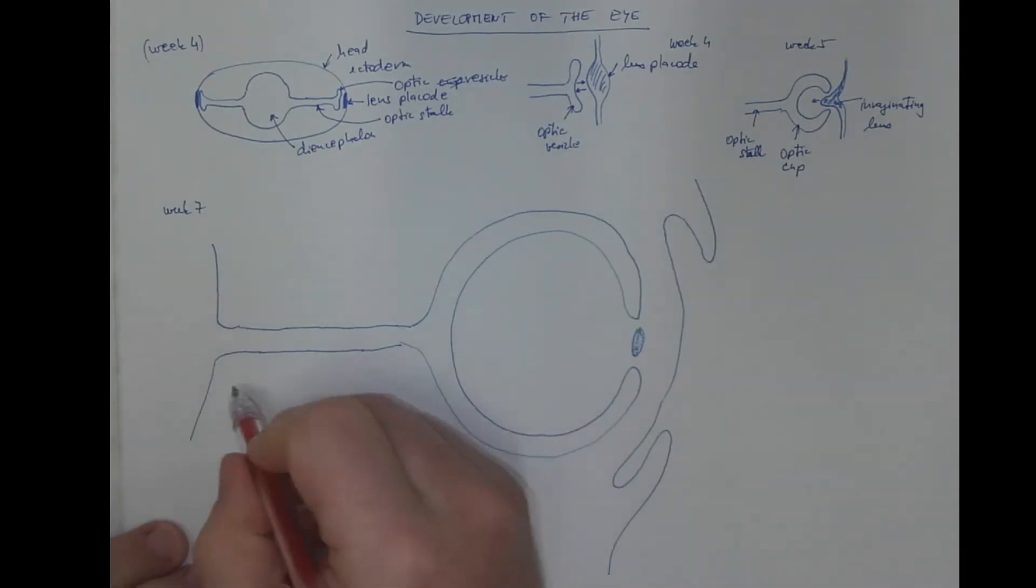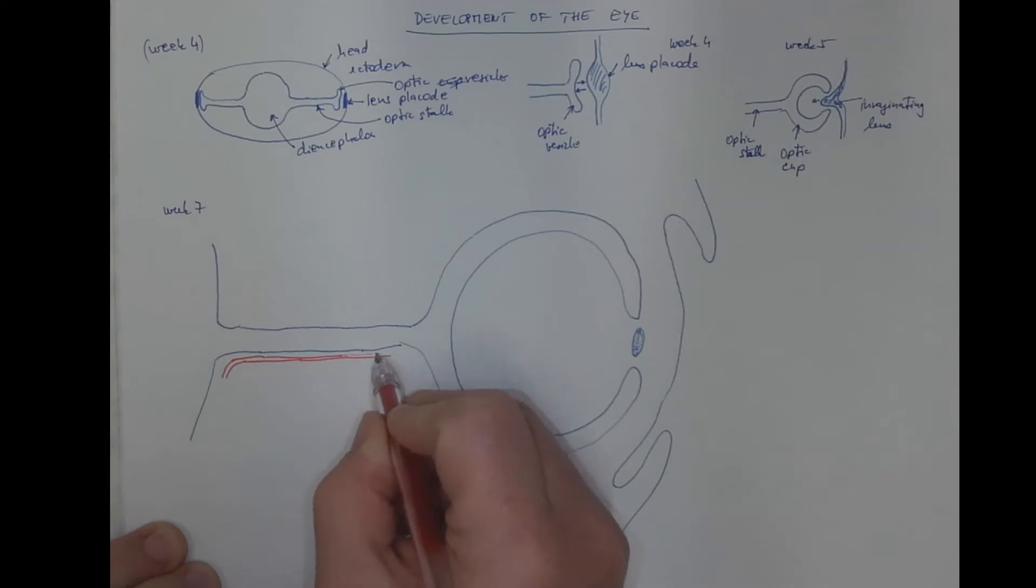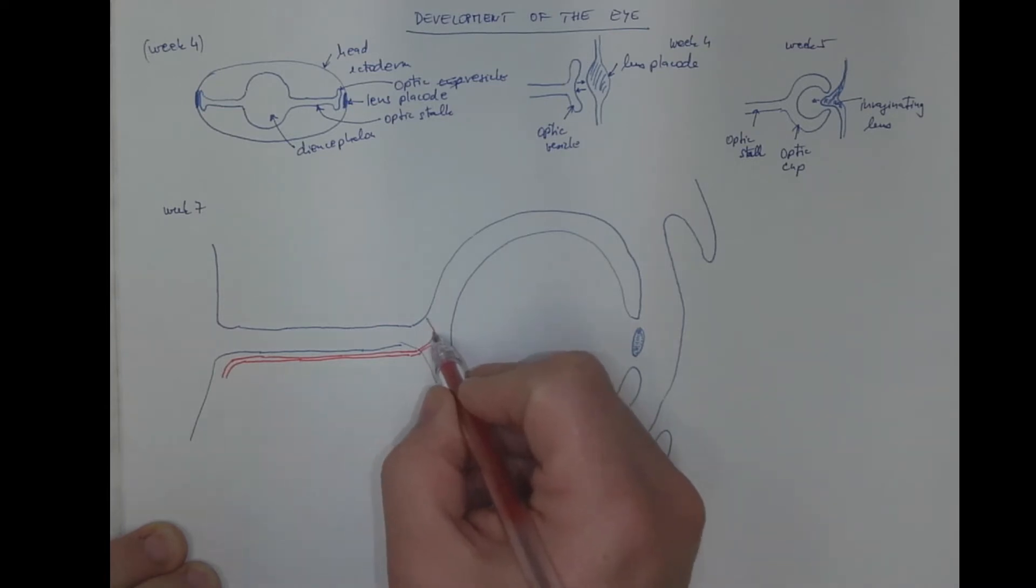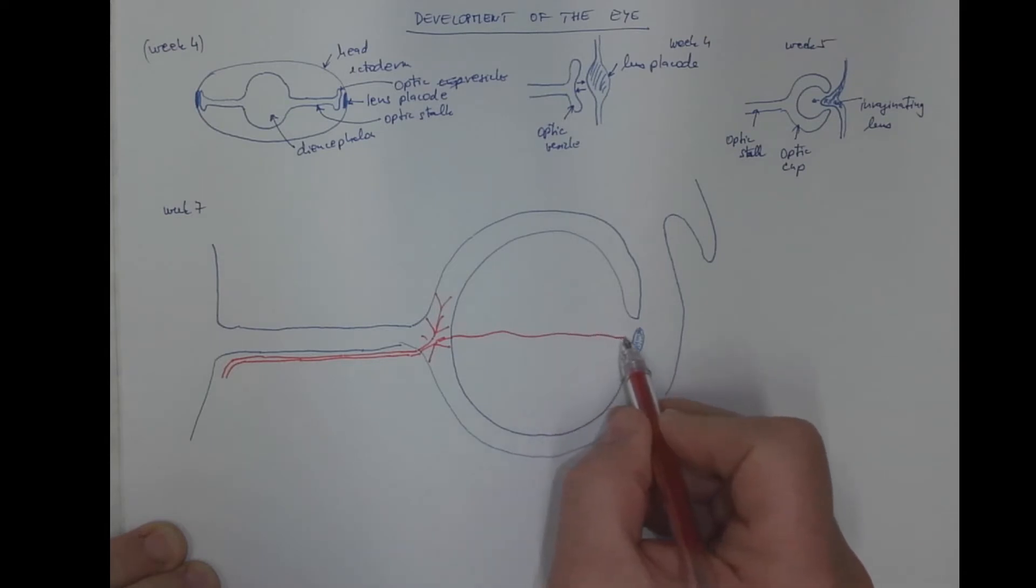Below the optic nerve, you have an artery called the hyaloid artery that provides nutrition for the developing eye. It penetrates the bulb and undergoes branching on the retina, and the branch continues to the growing lens.